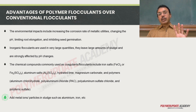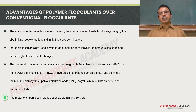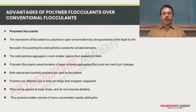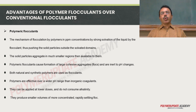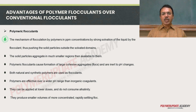All these chemicals contain metal particles or metal ions. So, in the sludge, addition of metal ions or metal particles such as aluminum or iron will take place. The solution to these problems is that the time has arrived to replace conventional coagulants and flocculants with new generation flocculants — called polymeric flocculants. We describe the mechanism of flocculation by polymers in ppm concentrations through strong solvation of the liquid by the flocculants.